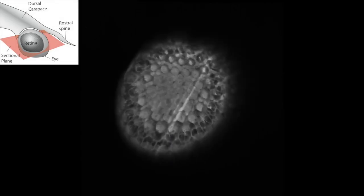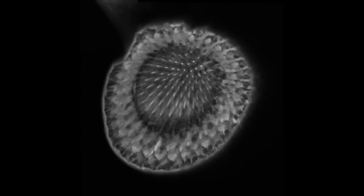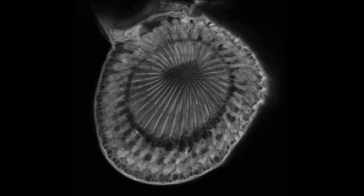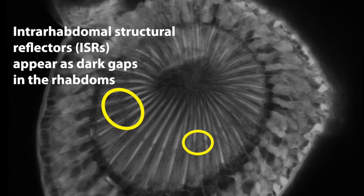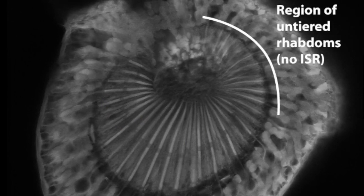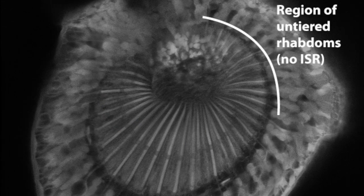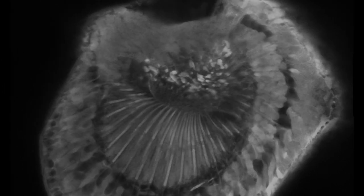The ISR is only present in the lateral and ventral units of the eye, as we can see using 3D imaging with two-photon microscopy. The ISRs appear as dark gaps in the rhabdoms. The dorsal part of the eye reveals a region of un-tiered rhabdoms and no presence of ISRs.